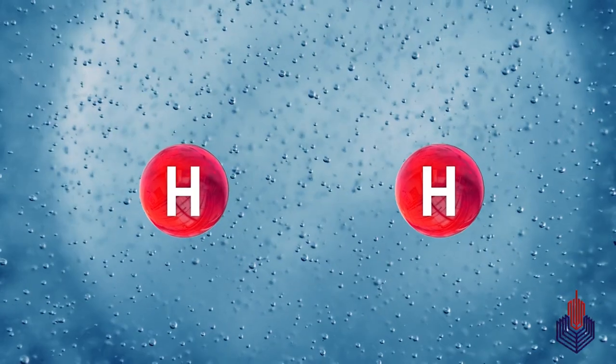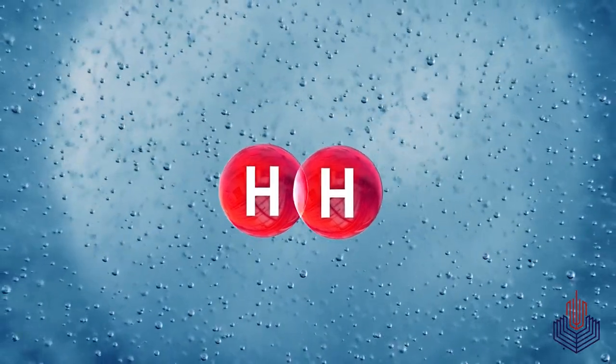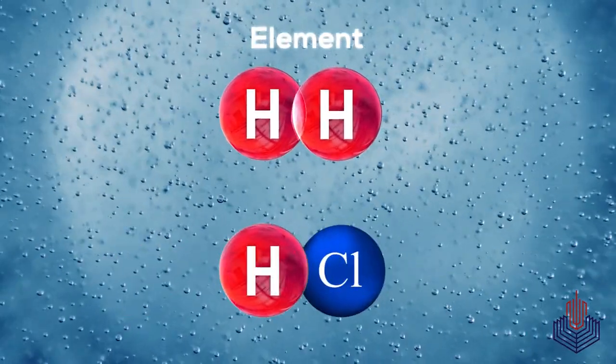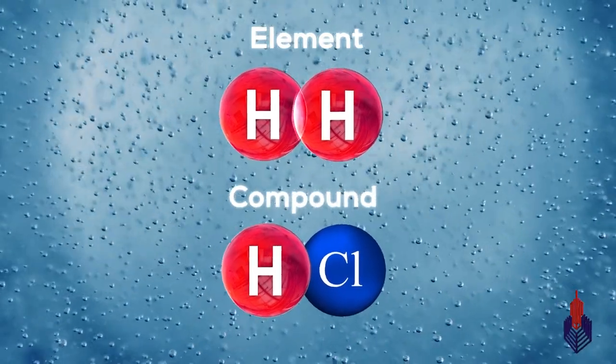Atoms are often confused with another term, which is molecules. So what are molecules? Basically, a molecule can be monatomic, diatomic, or triatomic based on the number of atoms within it. If the same atoms make up a molecule, we can say that it is an element. When different atoms make up a molecule, we can say that it is a compound.